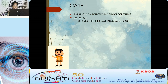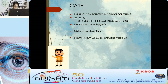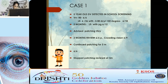A typical case: a 5-year-old with vision detected at school screening — right eye 6/6, left eye 6/36, best-corrected 6/18, no anterior or posterior segment pathology. Glasses were prescribed; after 2 months, left eye improved to 6/12. Two hours of patching was added; after 2 more months, crowding vision improved to 6/9. Continuing patching, after 3 months vision reached 6/6. Patching was stopped gradually with tapering, and at 6-monthly review, 6/6 vision was confirmed.